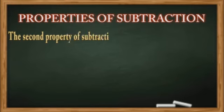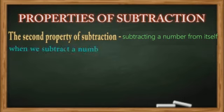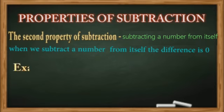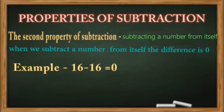The second property of subtraction is subtracting a number from itself: when we subtract a number from itself, the difference is zero. For example, 16 minus 16 equals zero. This shows that if we subtract a number from itself, the difference is always zero.